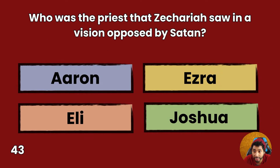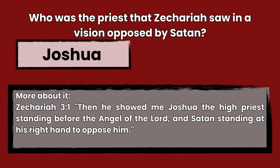Question 43: Who was the priest that Zechariah saw in a vision opposed by Satan? Aaron, Ezra, Eli, or Joshua? Answer: Joshua. Zechariah 3:1 — Then he showed me Joshua the high priest standing before the angel of the Lord and Satan standing at his right hand to oppose him.